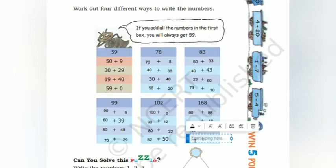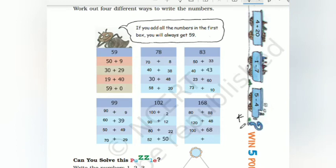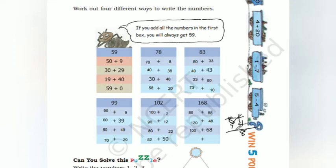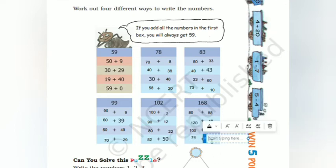100 is already given. What else can we write? For 168: 4 plus 4 is 8, and 8 plus 8 is 16. So 74 plus 94 equals 168 - that is one way we can write it.